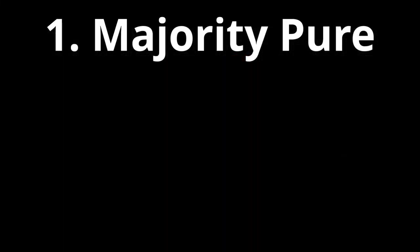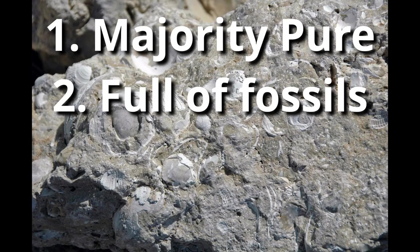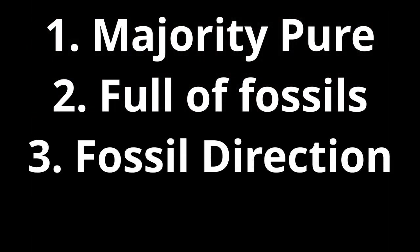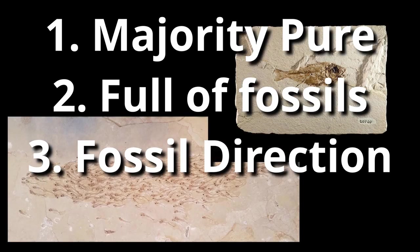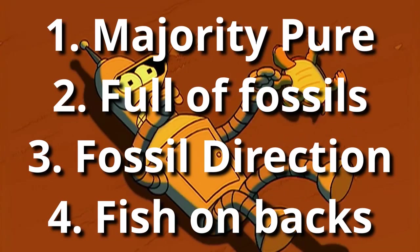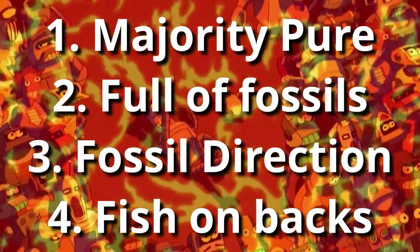The majority of limestone out there is not White-Cliffs-of-Dover pure — that's why limestone comes in such a variety of colors. His second point is that limestone is full of fossils: how is this an argument for you and against me? I have no problem with limestone being full of fossils. The third point is the unsourced direction of fossils — who measured that? I need a reference. And his last point is that fish are on their backs when fossilized — I don't even know how to address that.